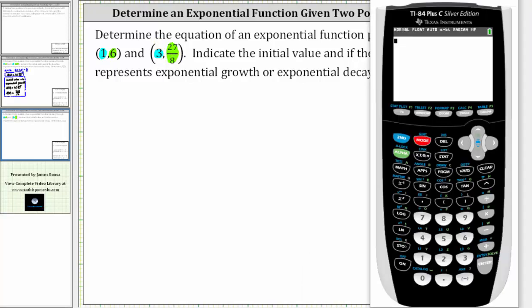Going to the calculator, we press stat and then enter. We need to clear the old ordered pairs or old data by going to the top of the column and pressing clear and then enter. So we press up, clear, enter. Go up to the top of L1, clear, enter.